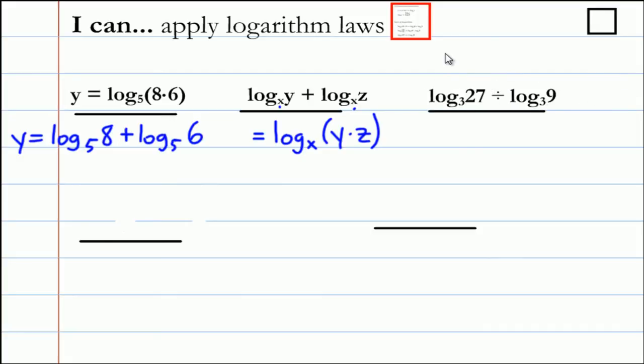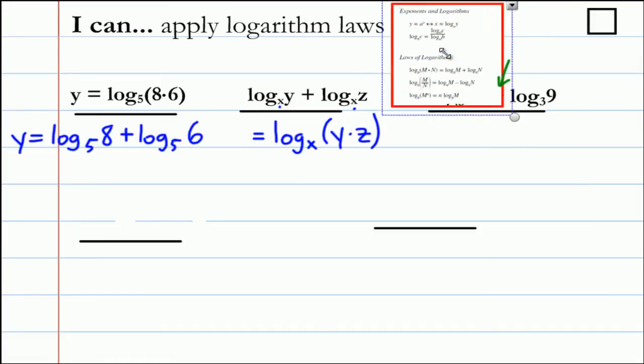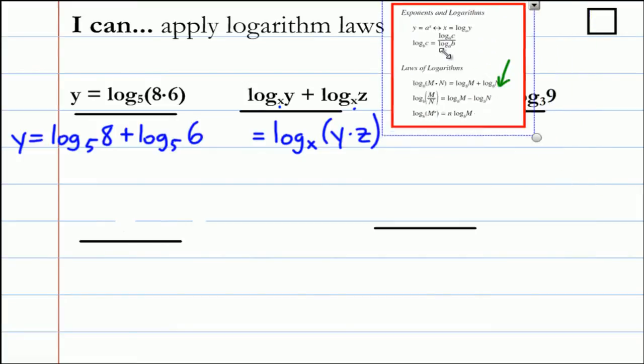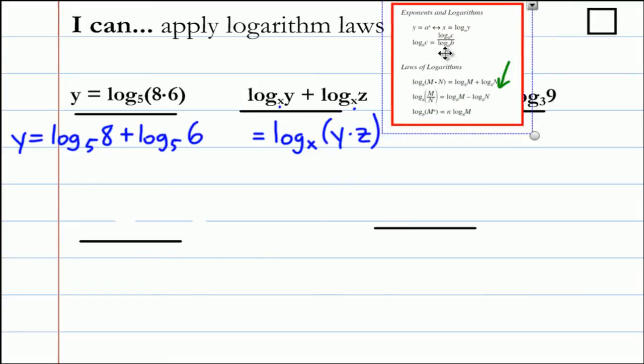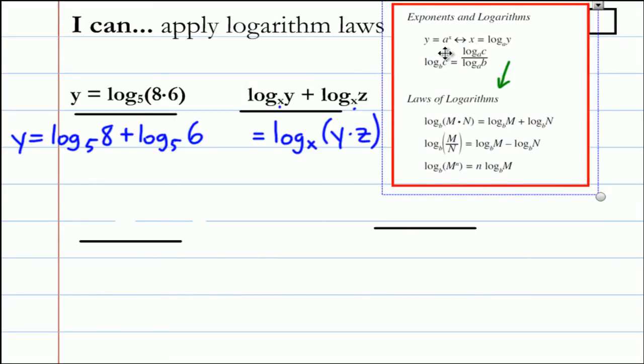Another example: log base 3 of 27 divided by log base 3 of 9. This is a bit of a trick question. We cannot use the quotient law as you would expect. Notice there's a division sign here, but the quotient law has a minus sign involved.